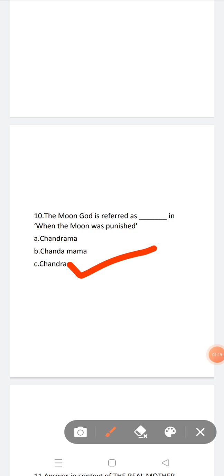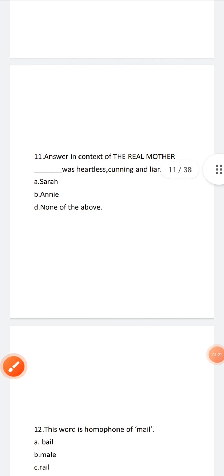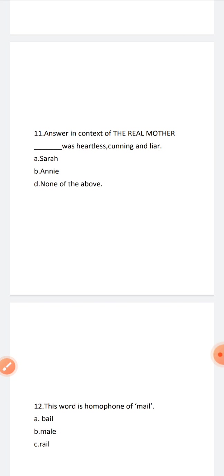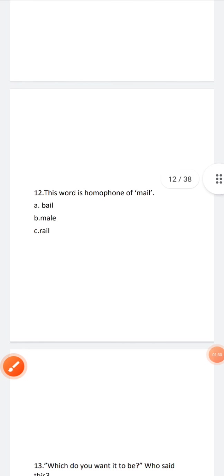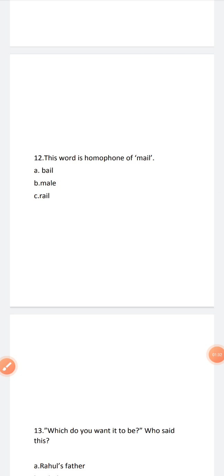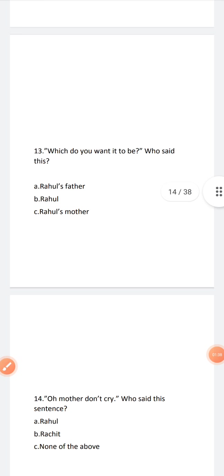Now the moon, the moon god is referred as Chandra in when the moon was punished. Now next, answer in context of real mother, Annie was heartless, cunning, and liar.